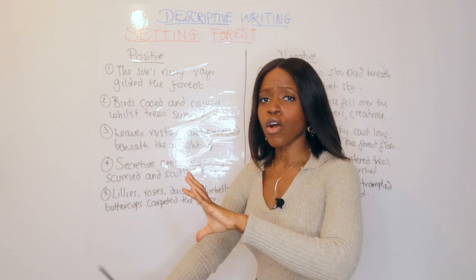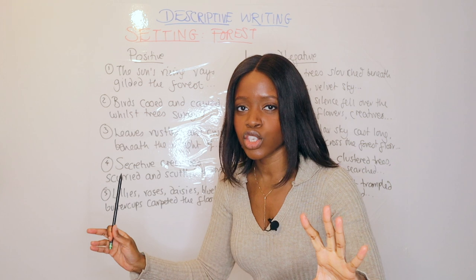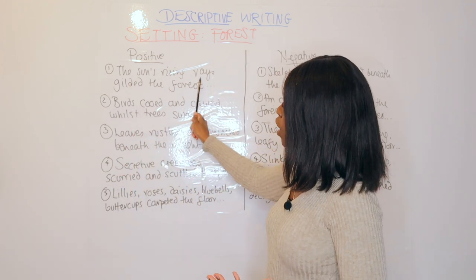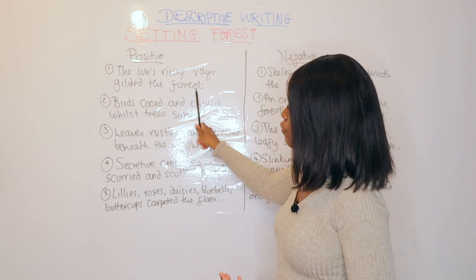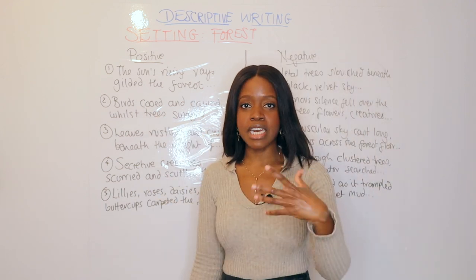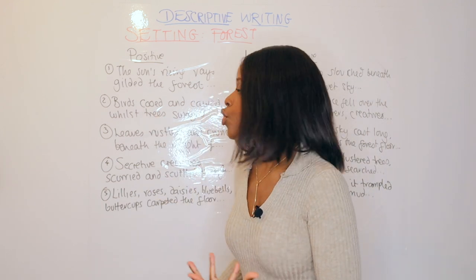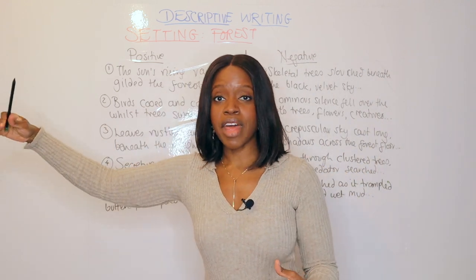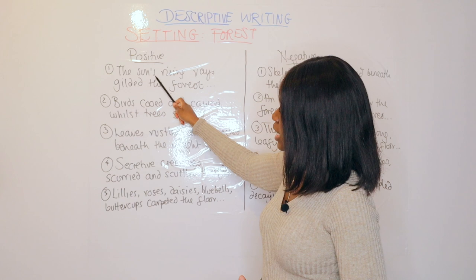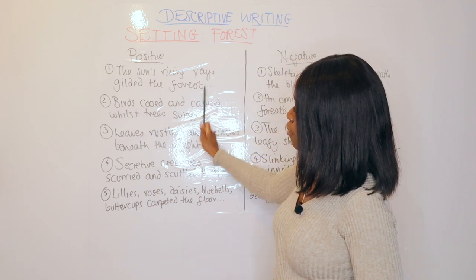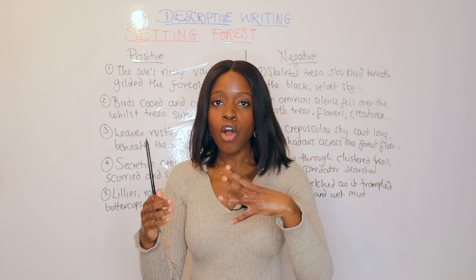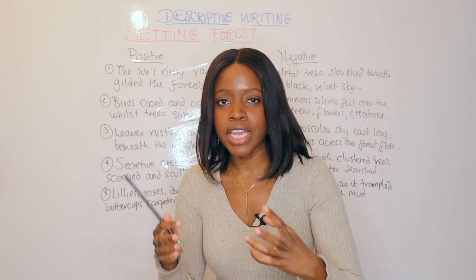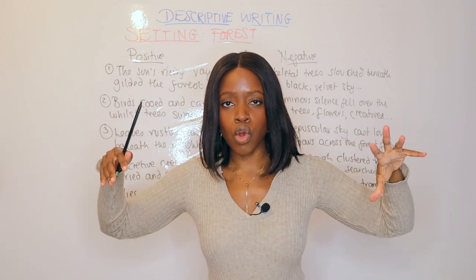The five phrases to remember for a forest setting written from a positive perspective — the first phrase, and I always love starting with pathetic fallacy: 'The sun's rising rays gilded the forest' and you can describe the forest as magnificent, resplendent, and so on. You then develop and latch on an extra sentence. This uses pathetic fallacy, alliteration, and creates a beautiful image of the forest covered in a golden sheen.